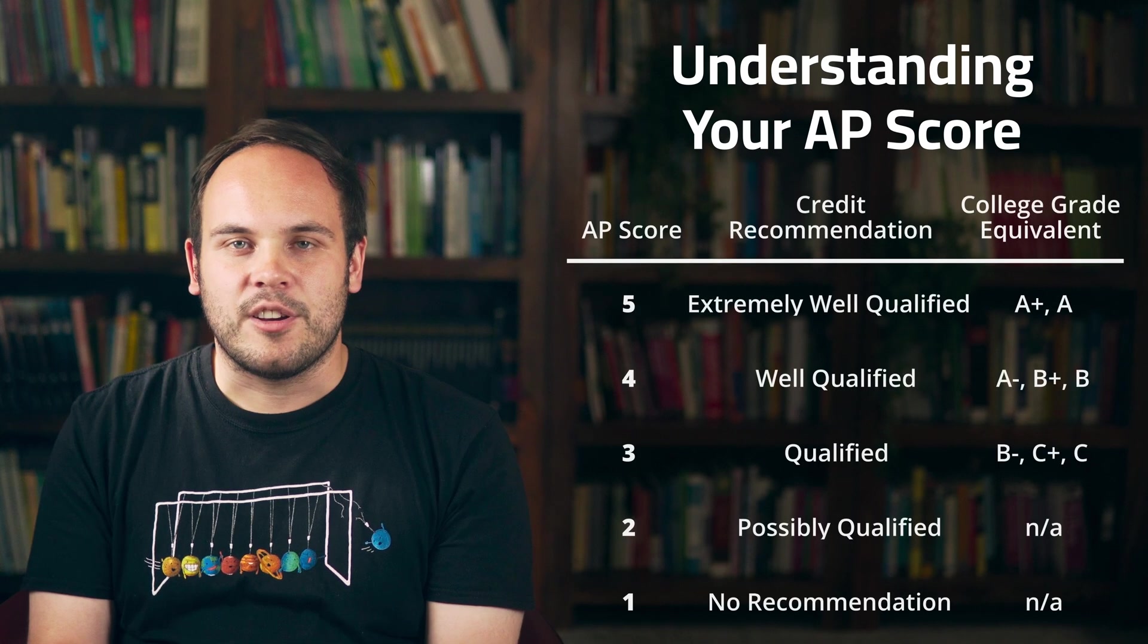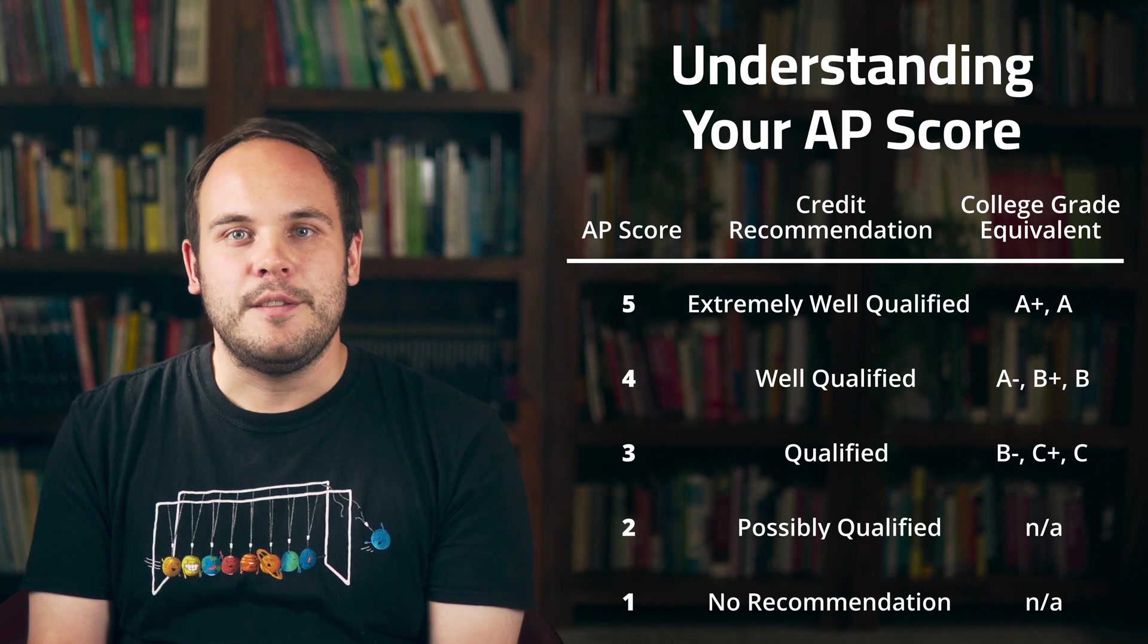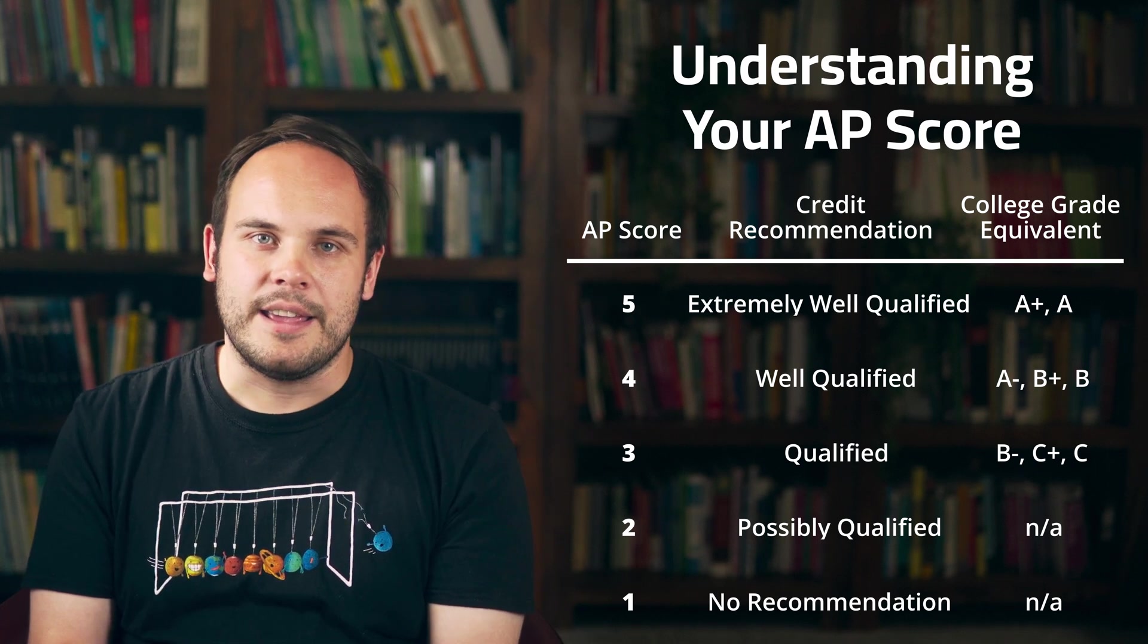While each college has its own unique criteria for the final marking, most standardize AP scores into college course grades. For example, a score of 5 on the exam is typically viewed as an A plus or A.